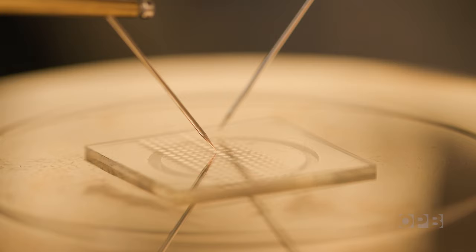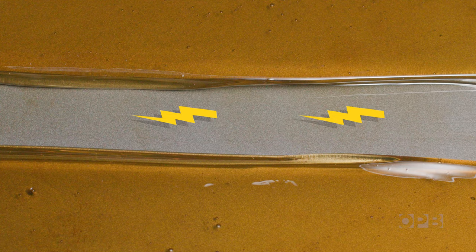The team's memristor works the same way. It builds bridges through the honey when exposed to certain levels of electricity. That's the data processing. When the electricity stops flowing, the bridge remains intact. That's the memory.